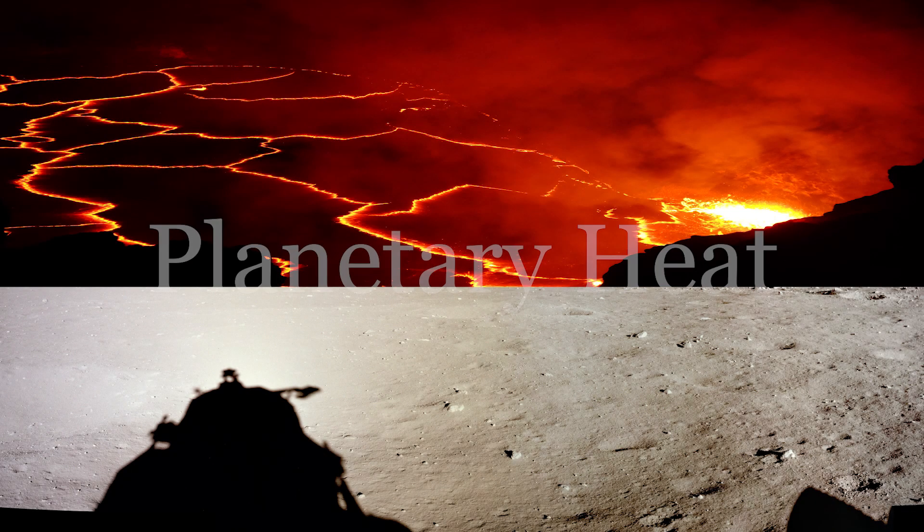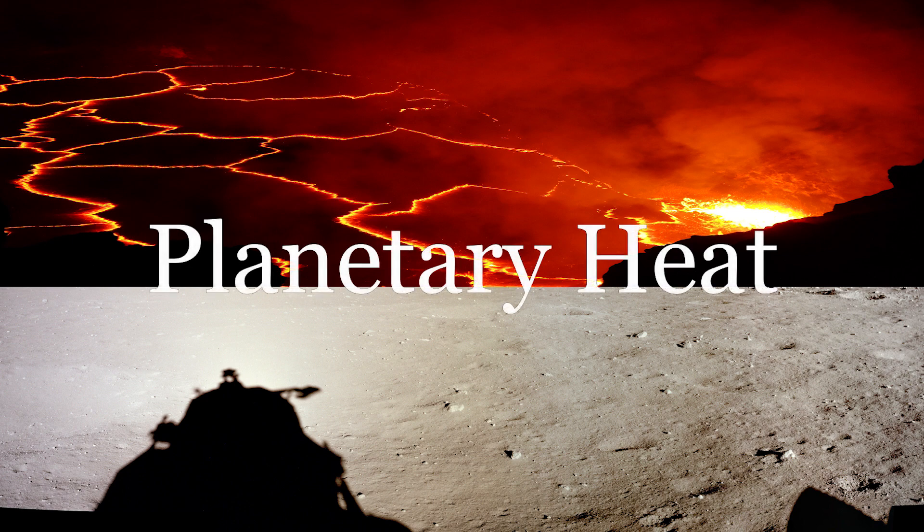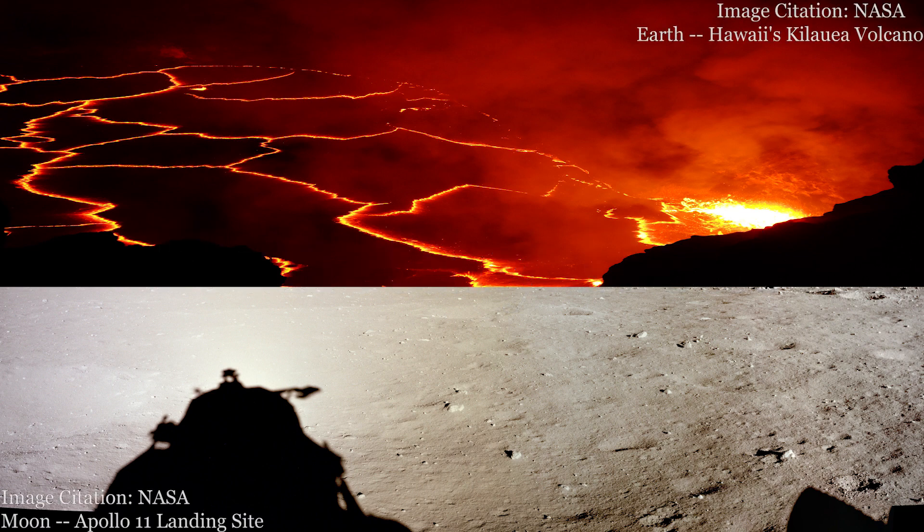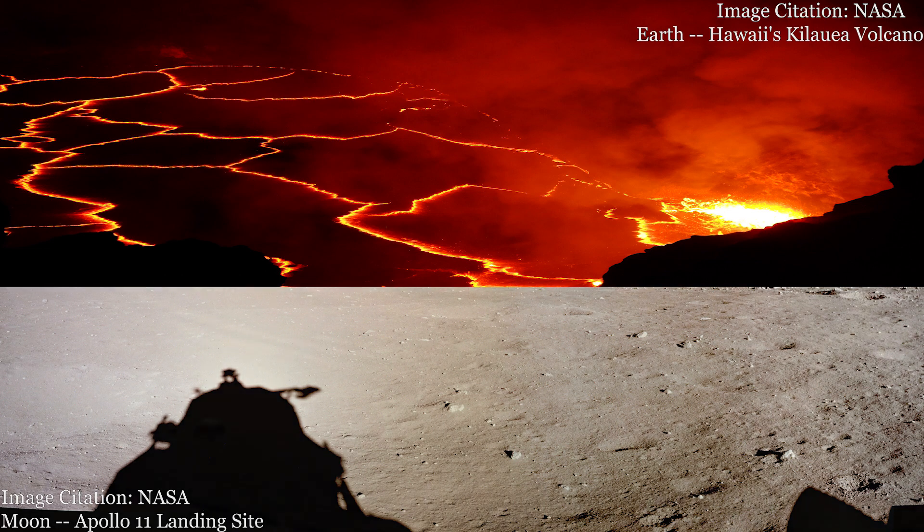The surfaces of terrestrial bodies have a wide range of characteristics. Earth has a very geologically active surface indicative of heat traveling outward from the core. Other bodies, like the moon, have dead surfaces with no geologic activity suggesting that there is no heat still escaping. This video will explore the underlying science behind geologic activity and escaping heat.